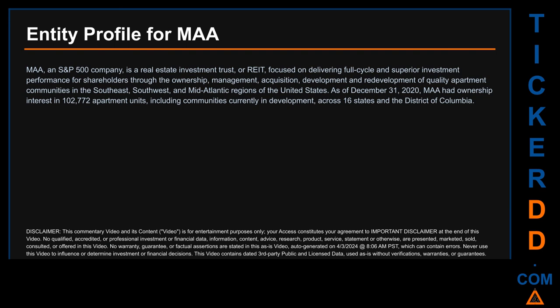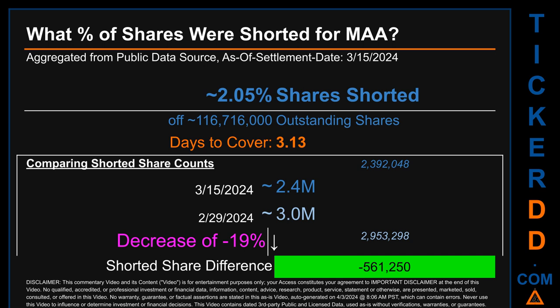What percentage of shares were shorted for MAA for the two-week period ending on settlement date March 15, 2024? About 2.4 million shares of MAA were shorted out of a total of approximately 116.7 million outstanding shares. Therefore, for MAA, based on as-is discovered public data when this video was generated, the ticker has a short interest of roughly 2.05 percent, calculated by dividing the number of shorted shares by the number of outstanding shares. Days to cover is 3.13.